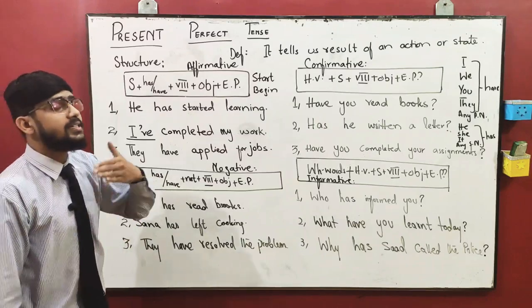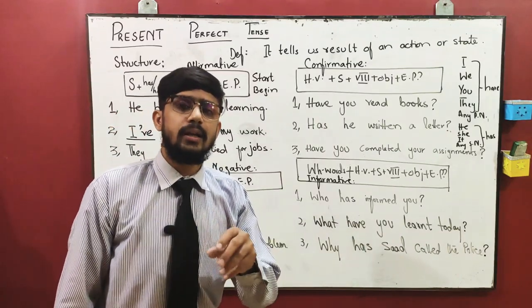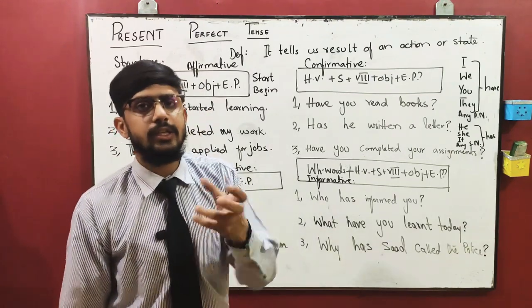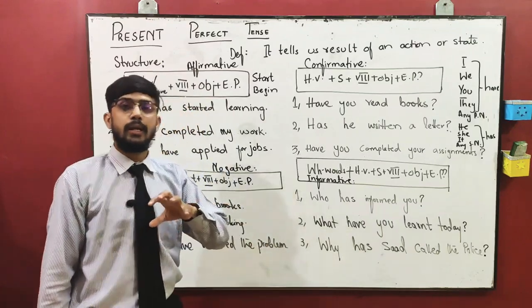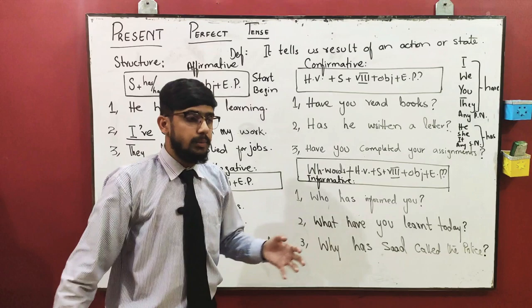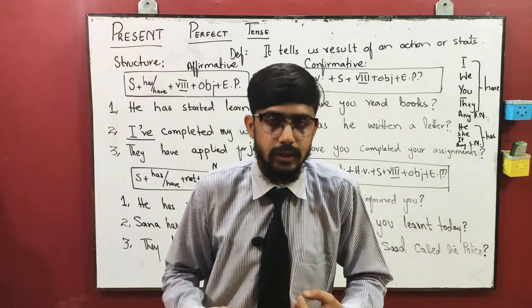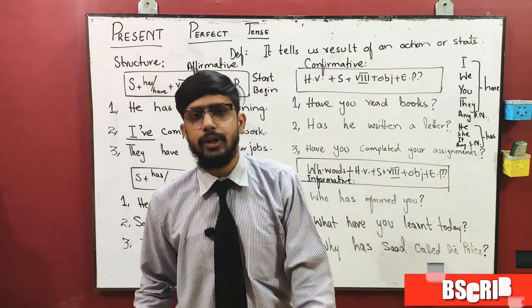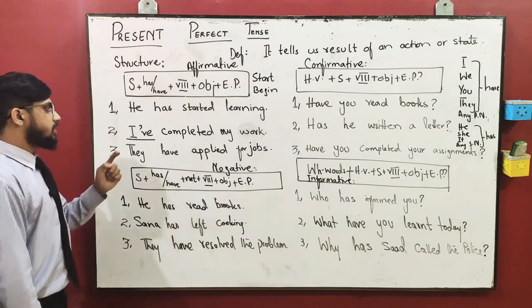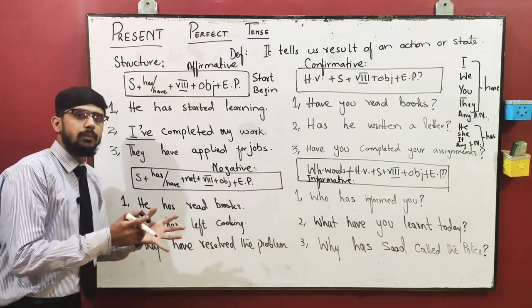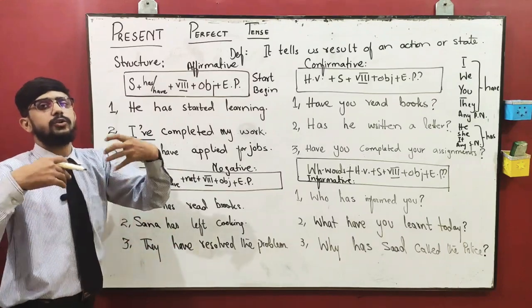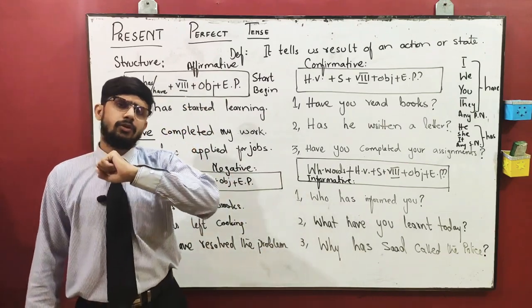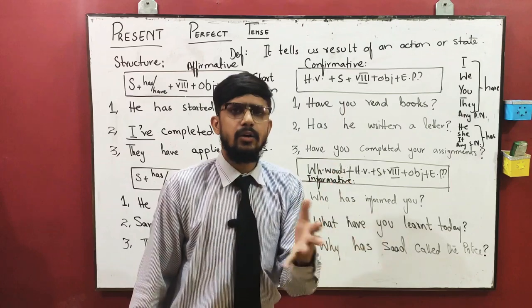To identify this, we have a small identification in Urdu: liya, liya, liya, or chukka, chuki, chukke. For example, maine khana kha liya hai, maine padh liya hai, main padh chuka hoon. This is the identification so you can easily identify and communicate that sentence.